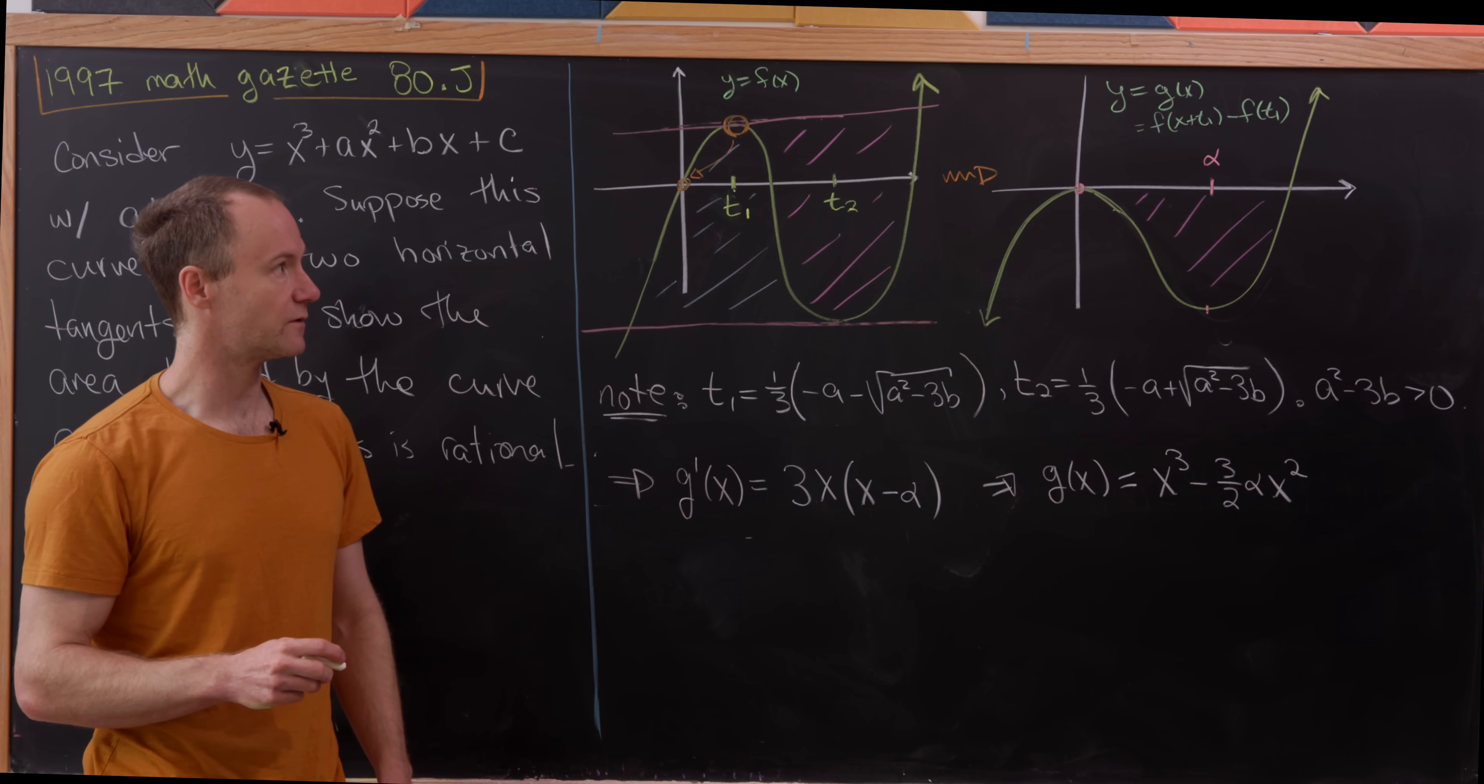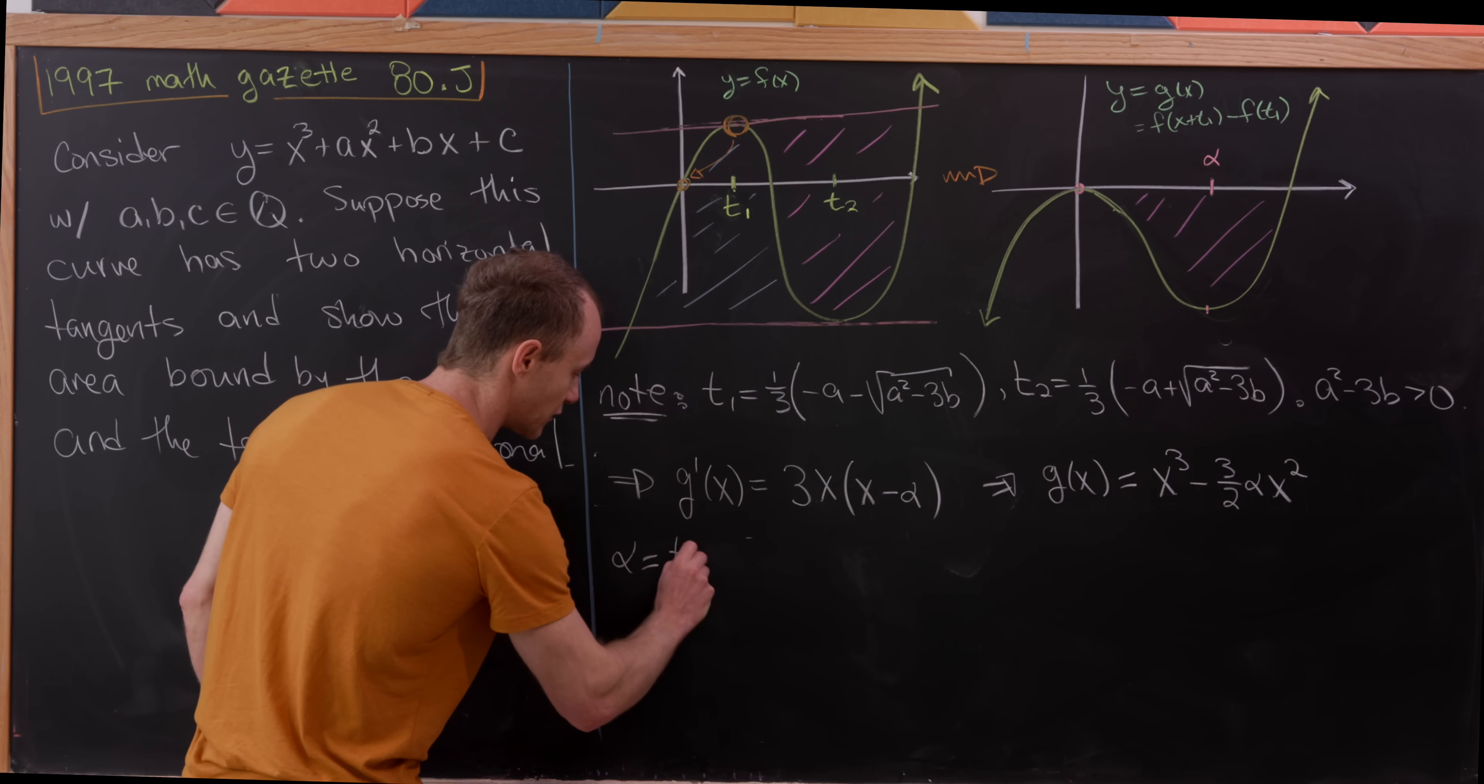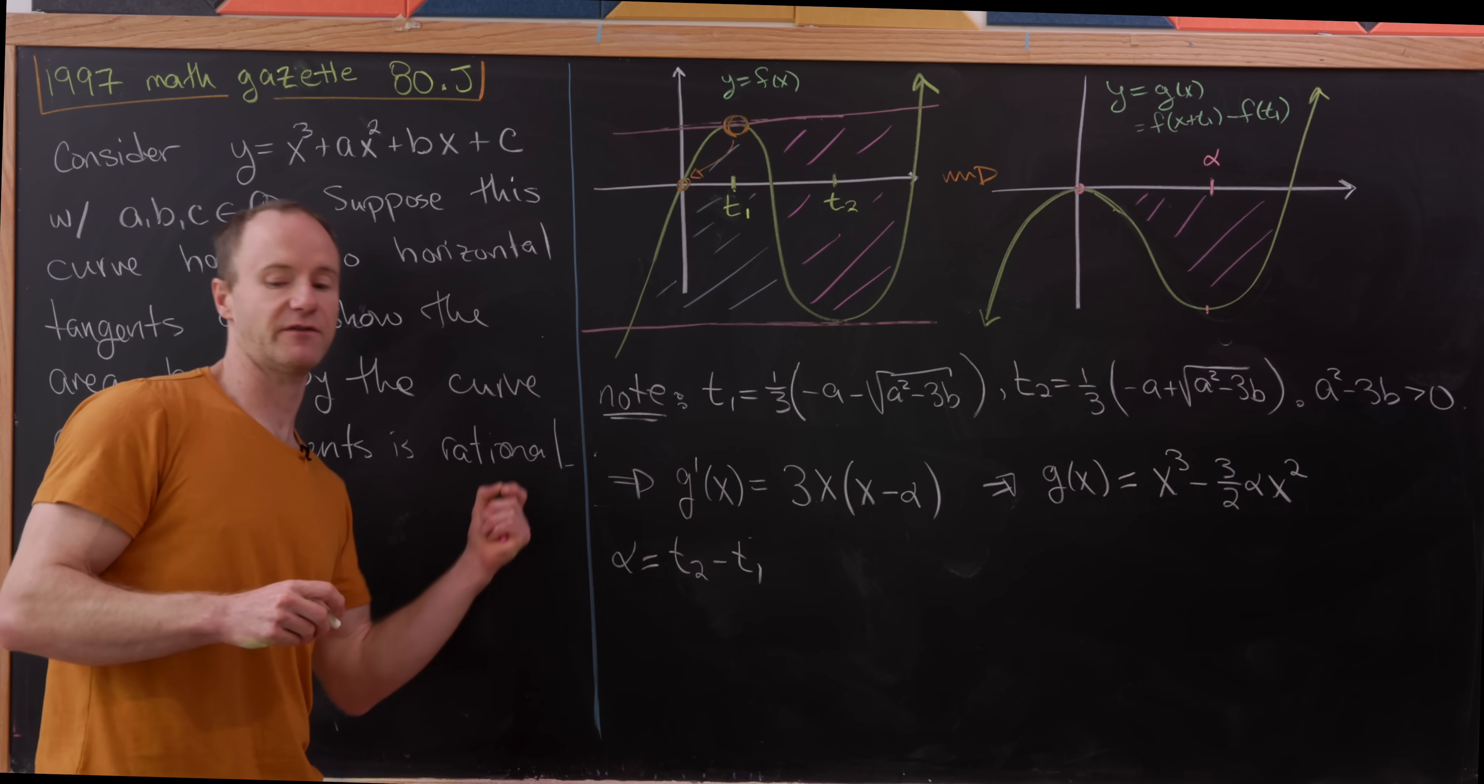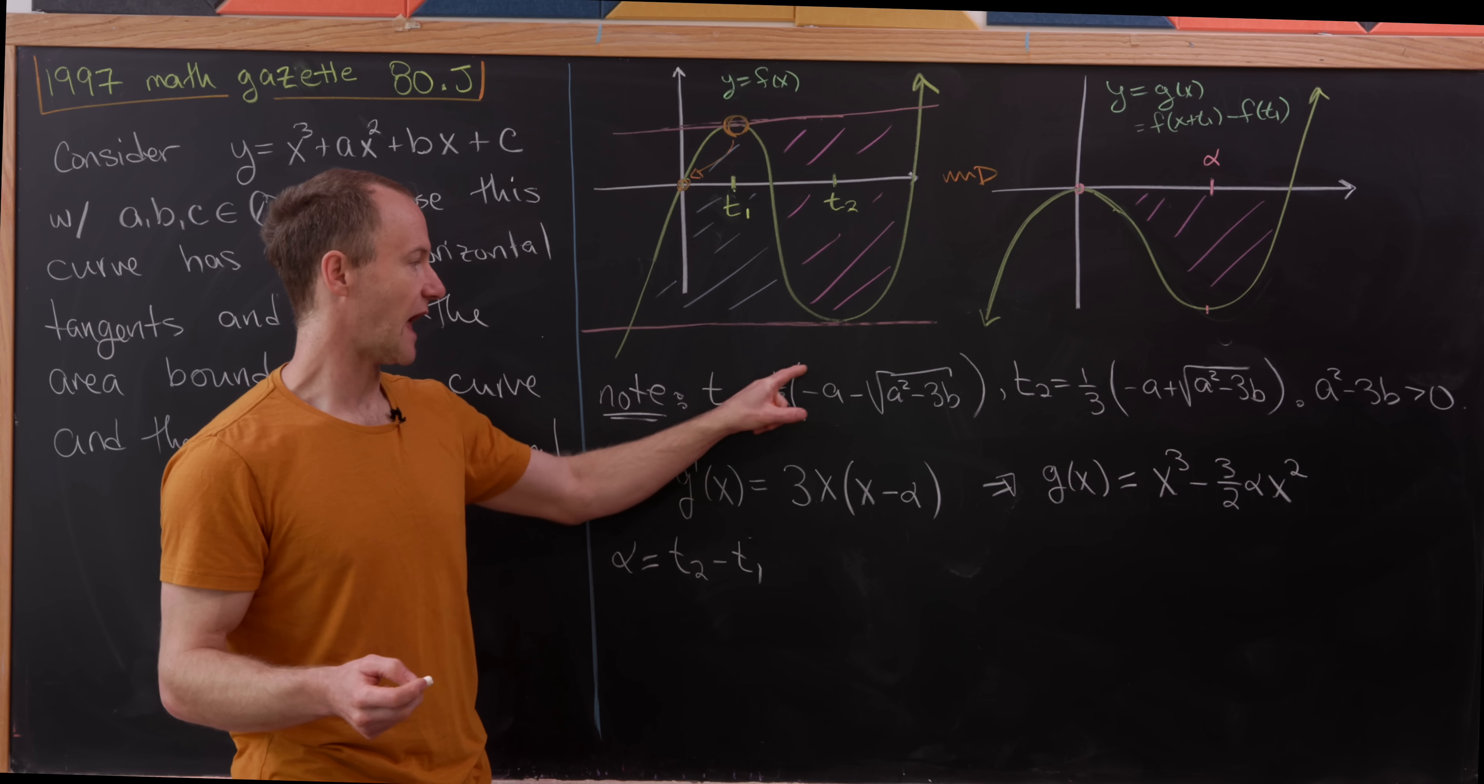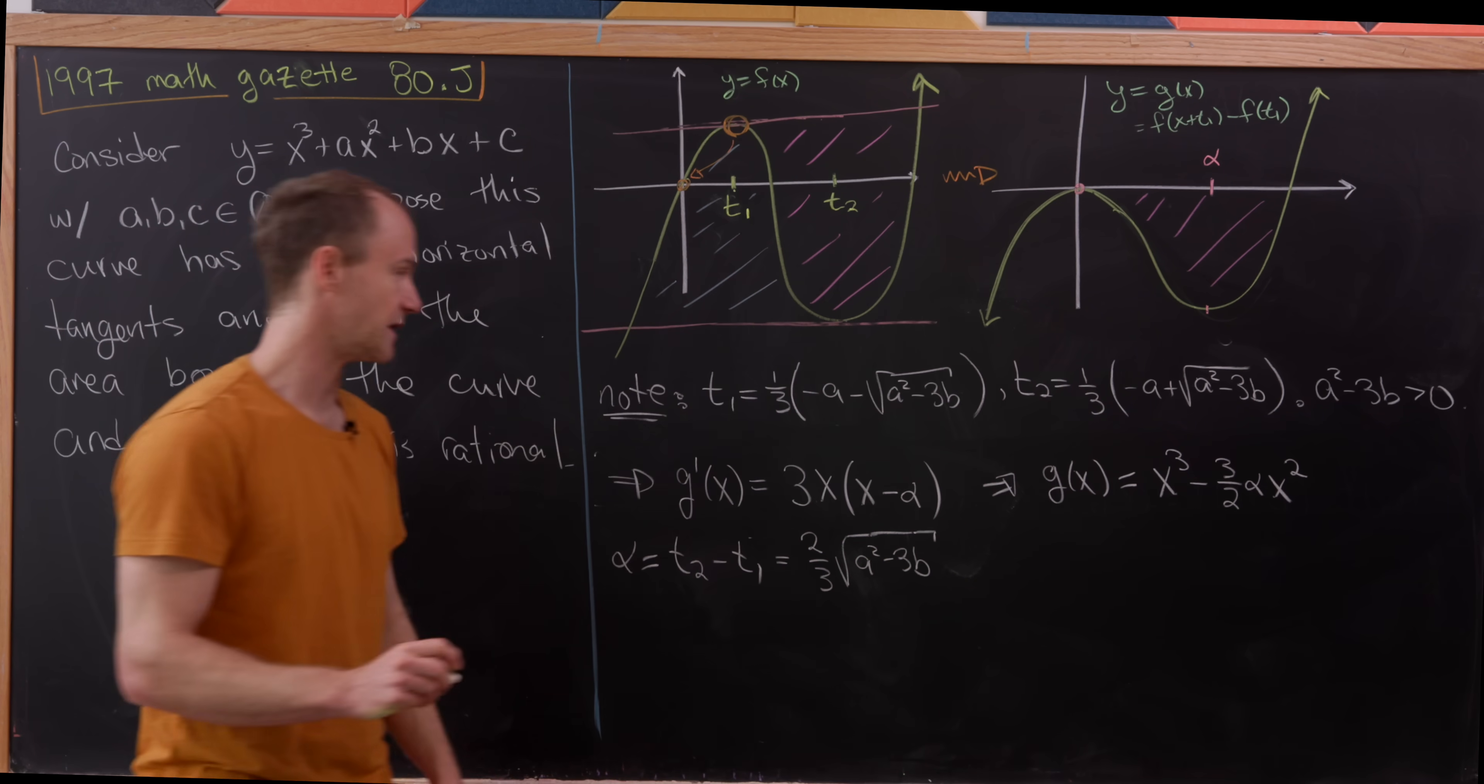And then next up, we can also figure out alpha, because observe that alpha is simply the shifting of t1 under the shift that we did. So in other words, alpha must be equal to t2 minus t1. Again, because it's t2 that's been shifted the same way that we shifted f of x into g of x. So we know t1 and t2 from this up here, so we can easily calculate that. Notice that the a terms cancel, and we're left with the square root terms. In this case, we get 2 thirds times the square root of a squared minus 3 times b. So that's alpha.